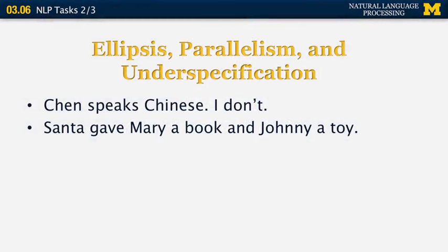There are many other interesting aspects of NLP, including ellipsis, parallelism, and underspecification. Ellipsis is when a word is missing because it's implied from context — for example, 'Chen speaks Chinese, I don't' means 'I don't speak Chinese,' using ellipsis to skip those words while parallelism makes the meaning clear. Similarly, 'Santa gave Mary a book and Johnny a toy' implies Santa gave Johnny a toy through parallel structure. This is the end of the second section on NLP tasks and applications; more will follow in the next segment.